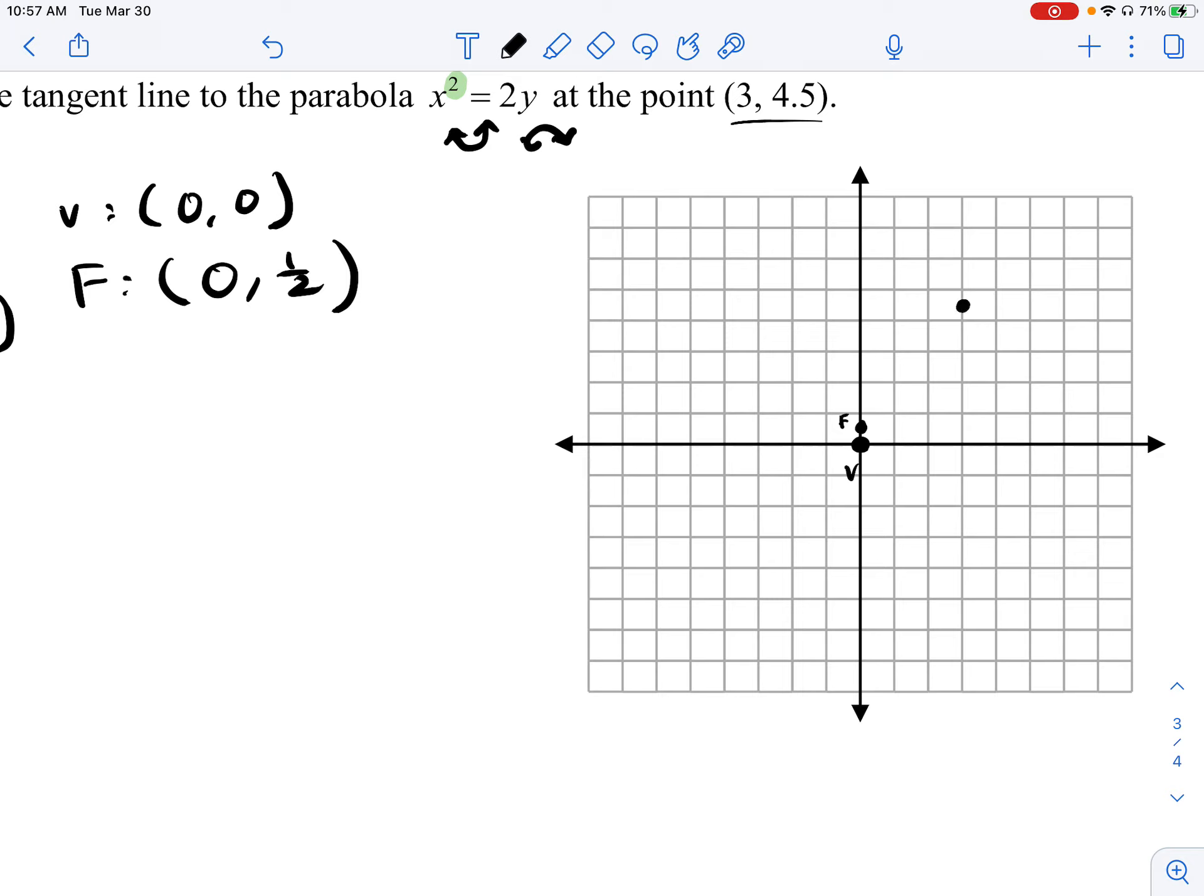And since it's symmetric about our axis of symmetry, I can then go ahead and graph another point here at (-3, 4.5). Normally I would want you to graph more points for our parabola, but for what we are trying to do right now, we're just trying to get a rough sketch of what the parabola looks like.